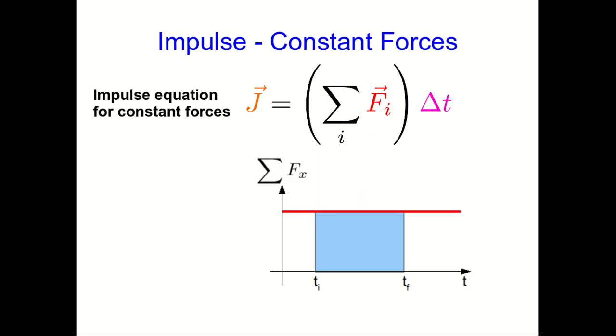But let's just stop and interpret it for a moment. It's vectorial, so let's think about the x component. So here is a sum of x components of forces versus time for this constant set of forces. And note that there's delta t, and there is the sum of the x component of forces.